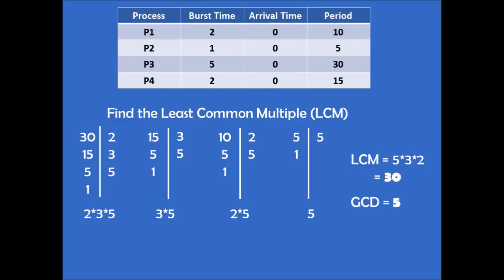Now that we know it is good to apply the Rate Monotonic algorithm for this example, we proceed to find the Least Common Multiple, or LCM, of each of the periods. One technique is to find the prime factors of each of the periods. For example, in the case of 30, the prime factors are 2, 3, and 5 — meaning 30 divided by 2 is 15, 15 divided by 3 is 5, and 5 divided by 5 is 1. In the case of 15, we have 3 times 5. We do the same for the other processes. The LCM uses the common and uncommon factors with the greatest exponent, so the LCM is 30.